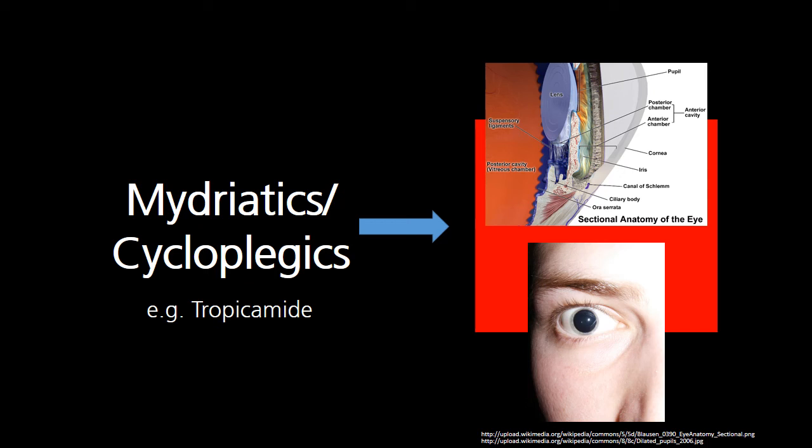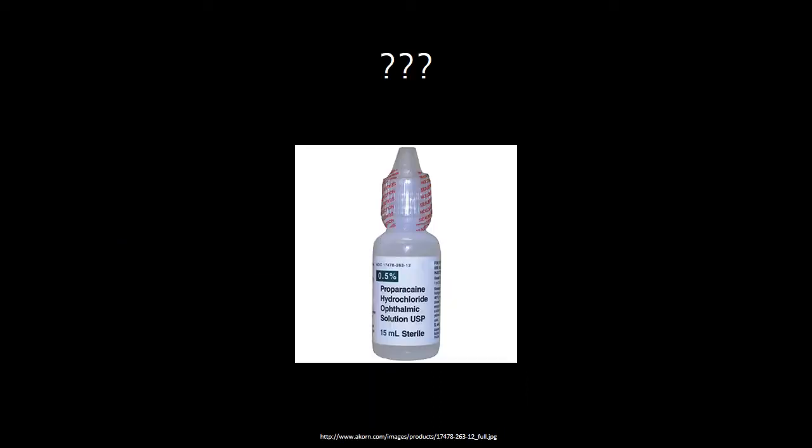That covers all 10 colors used by the AAO classification system. But you may notice, especially if you're an emergency room physician, that one medication in particular is missing from this, and that's preparacaine or some of your other topical ophthalmic anesthetics that we often use to facilitate better exams. Now when I've looked at the medication, it's usually in a white or green container. As far as I know, this med does not have a classification in this system.